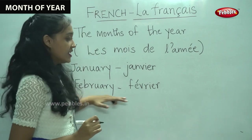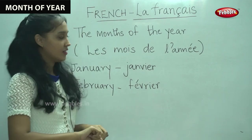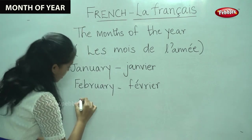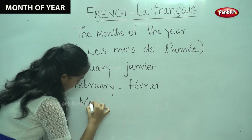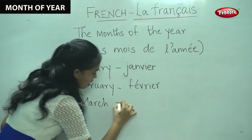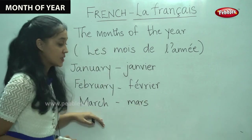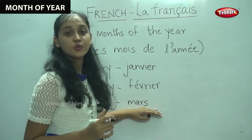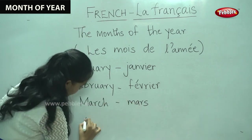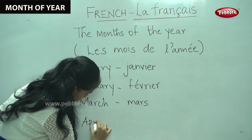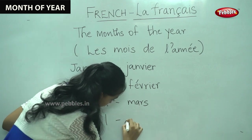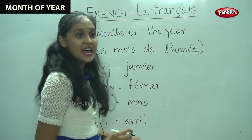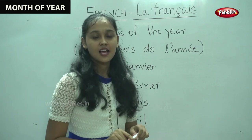February is written as Février. Once more, Février. March is pronounced as Mars. Once more, Mars. April is pronounced as Avril. Avril.